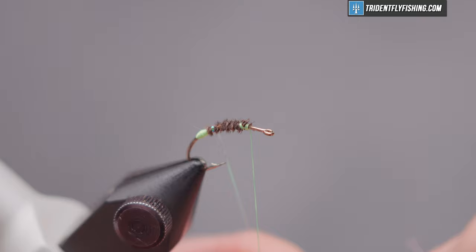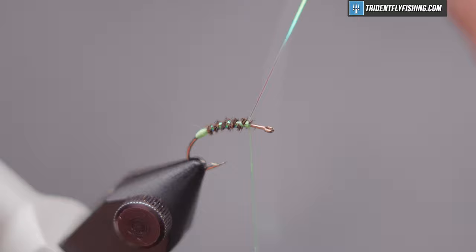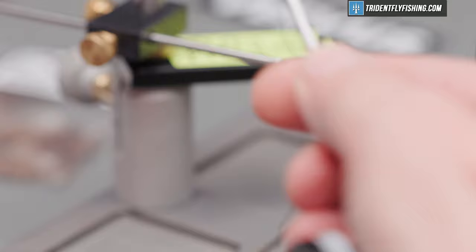And run up our rib. Make some even open spiral turns. Adds just a little bit of flash to the fly and also protects the body material, which is kind of fragile. You reach tie-in point. Capture the flashabou. Cut off your excess.